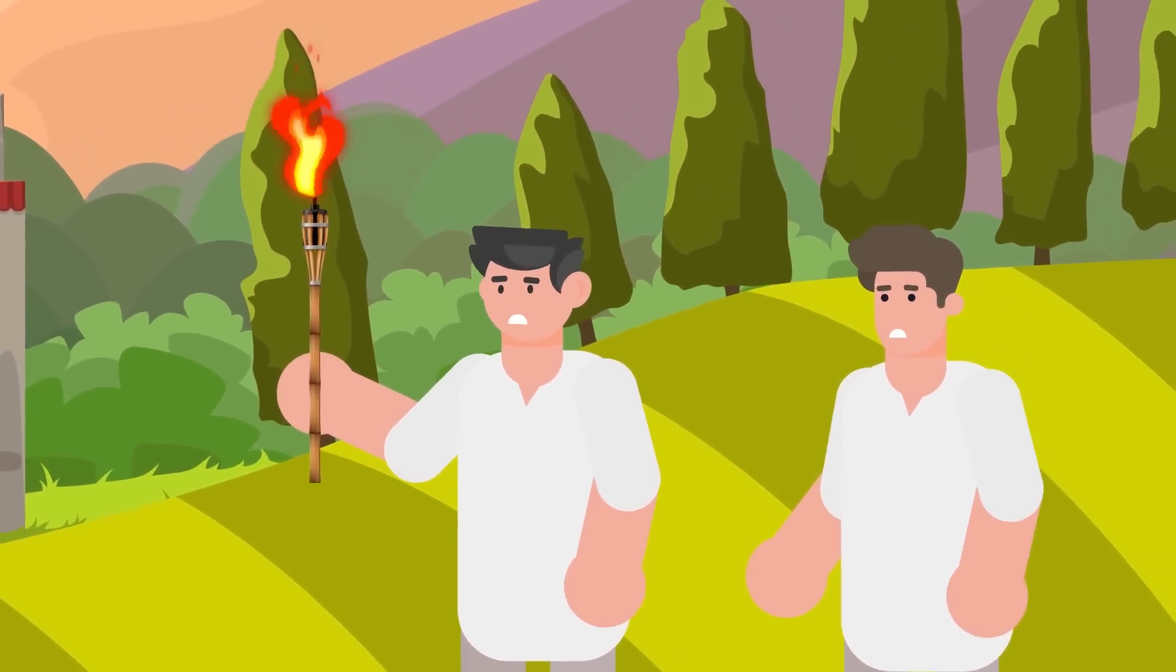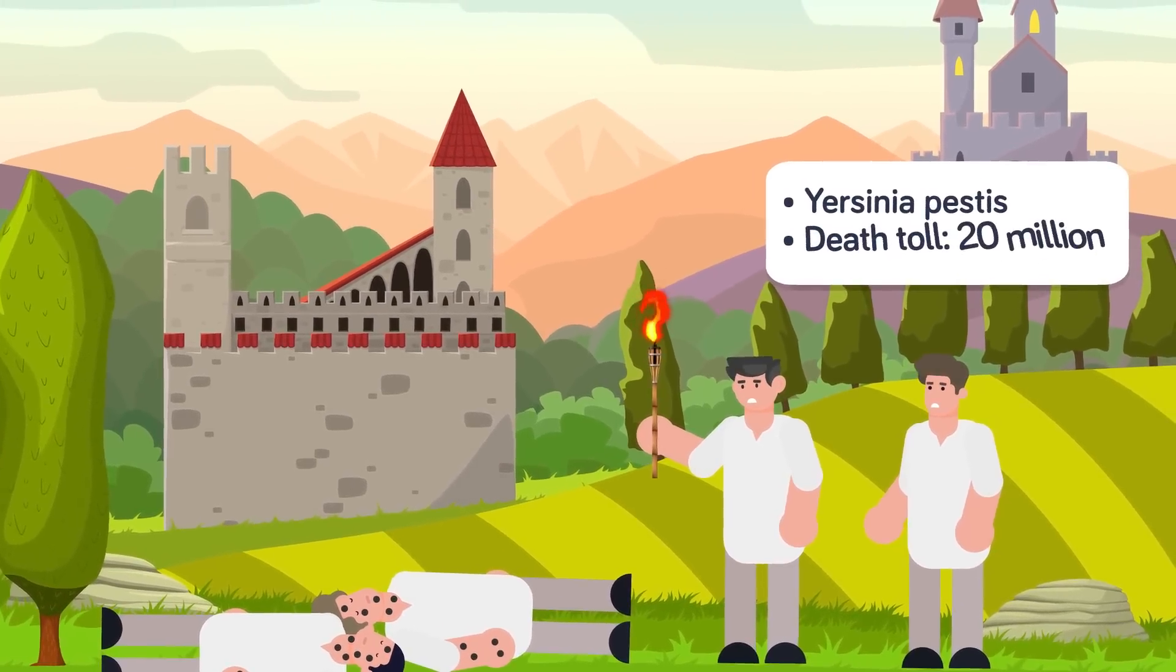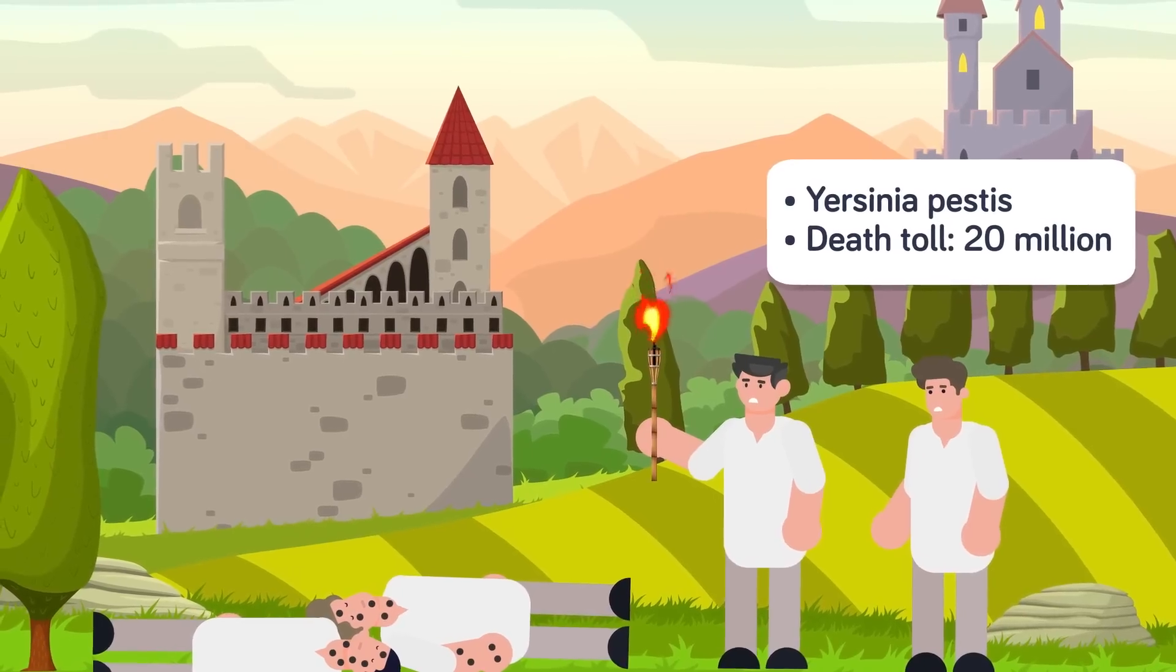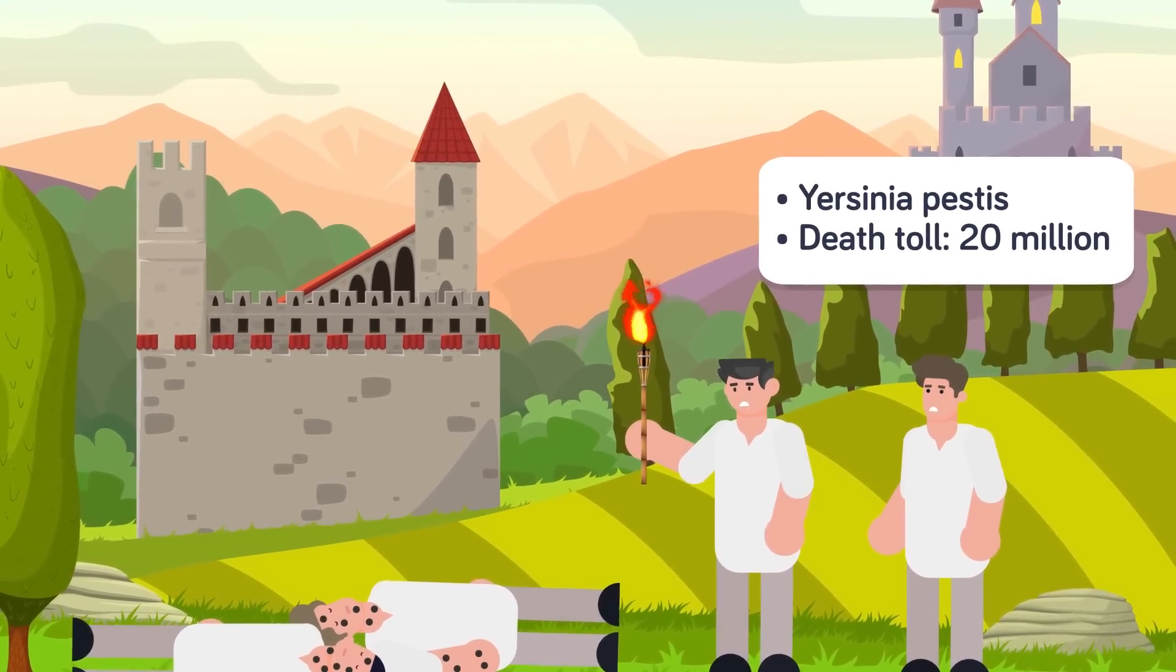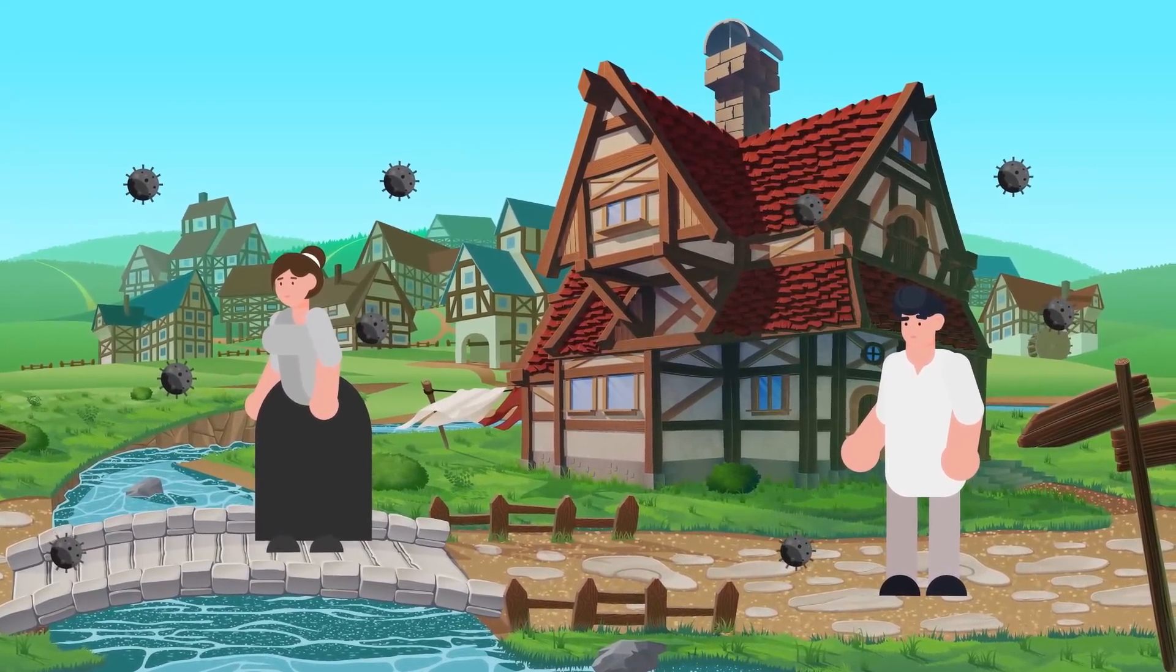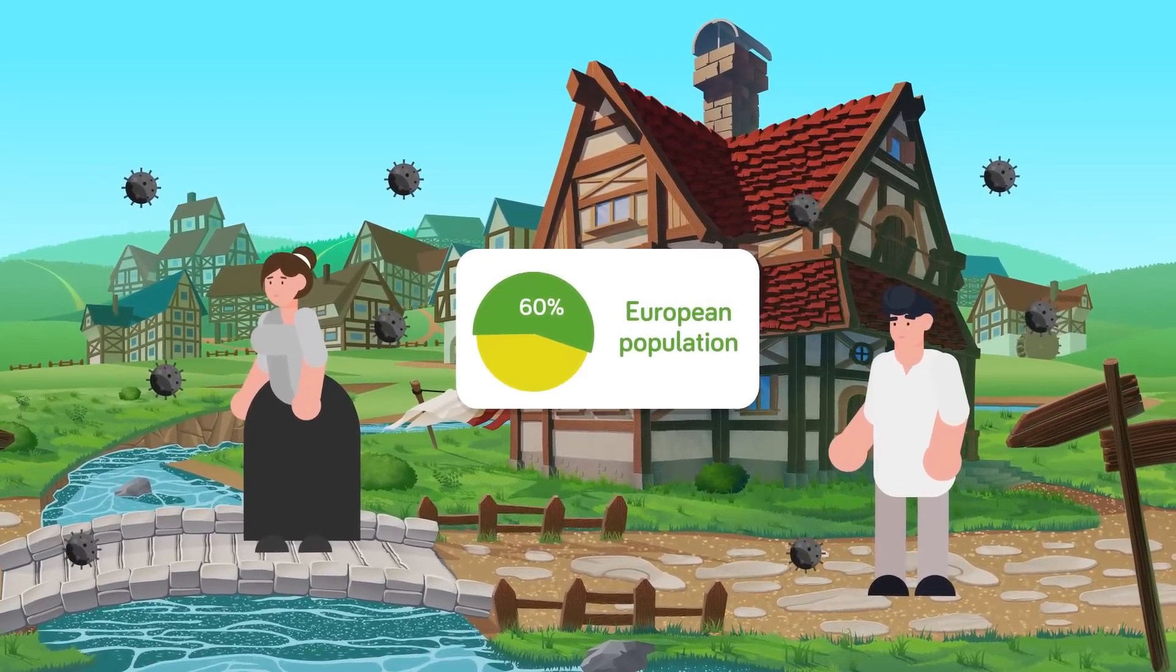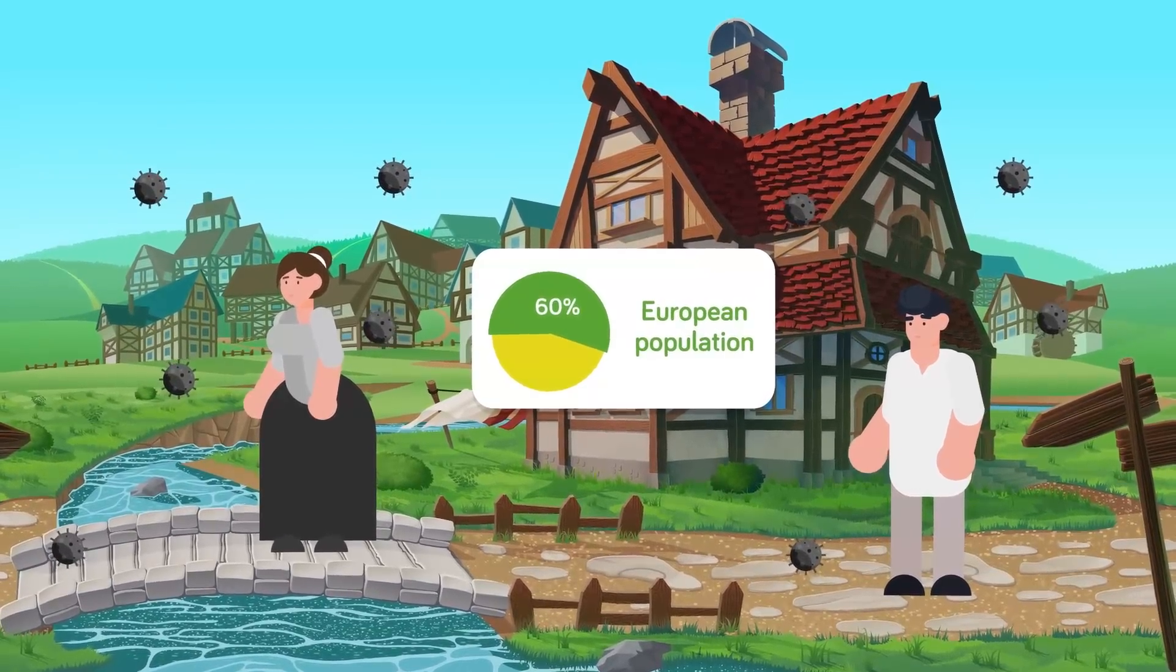We now know that the infection was caused by a bacteria called Yersinia pestis. But of course, people knew nothing about that in the 14th century, and by the time the plague subsided it had killed an estimated 20 million people, a third of the entire population of Europe at the time. Since precise numbers are hard to come by, the death toll could have been much higher. Some experts estimate that up to 60% of the population was wiped out by a tiny single-celled bacteria.